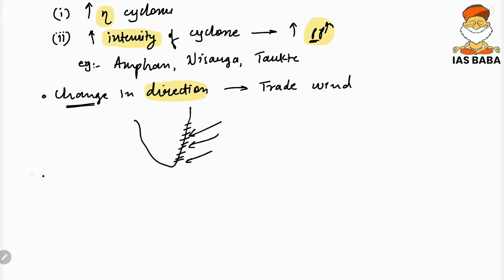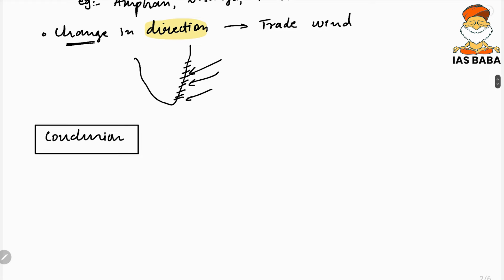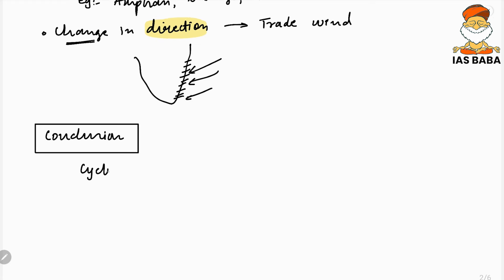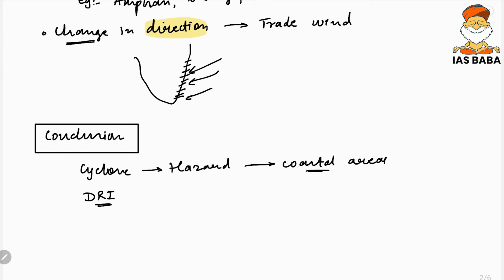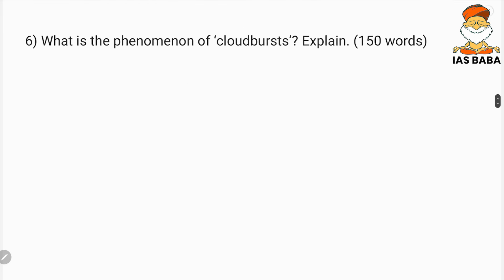In the conclusion, since it's just a 150-word question, one or two lines are sufficient. As a cyclone is a disaster and a hazard, disaster management needs to be in picture along the coastal areas, because this is going to bring torrential rainfall causing coastal flooding. There is a need for mitigation of such hazards along coastal areas, including disaster-resilient infrastructure.